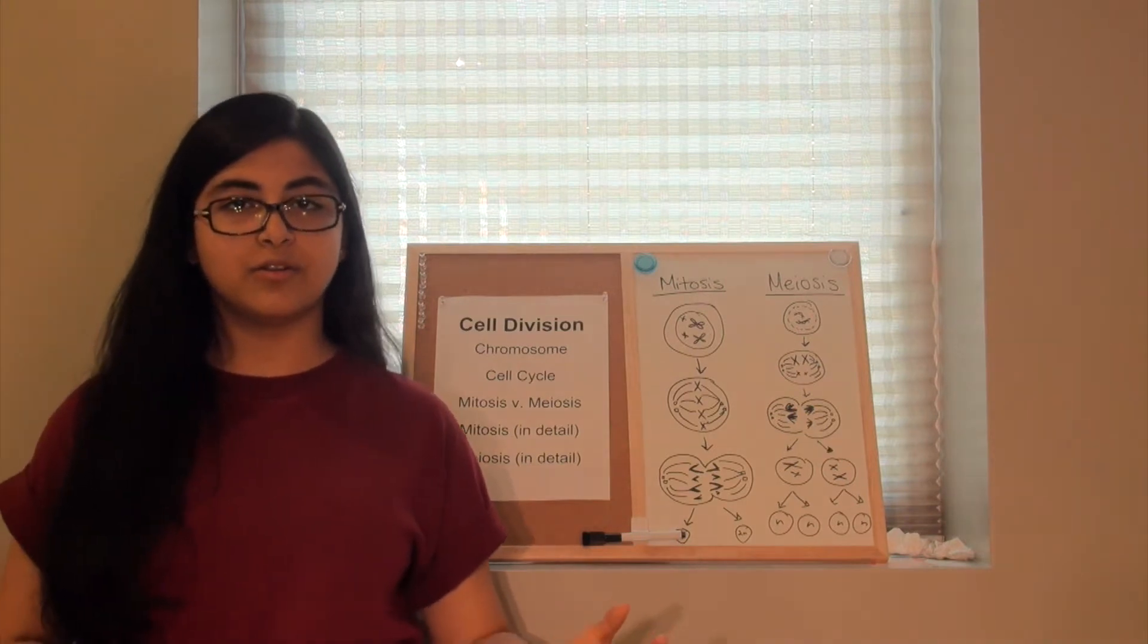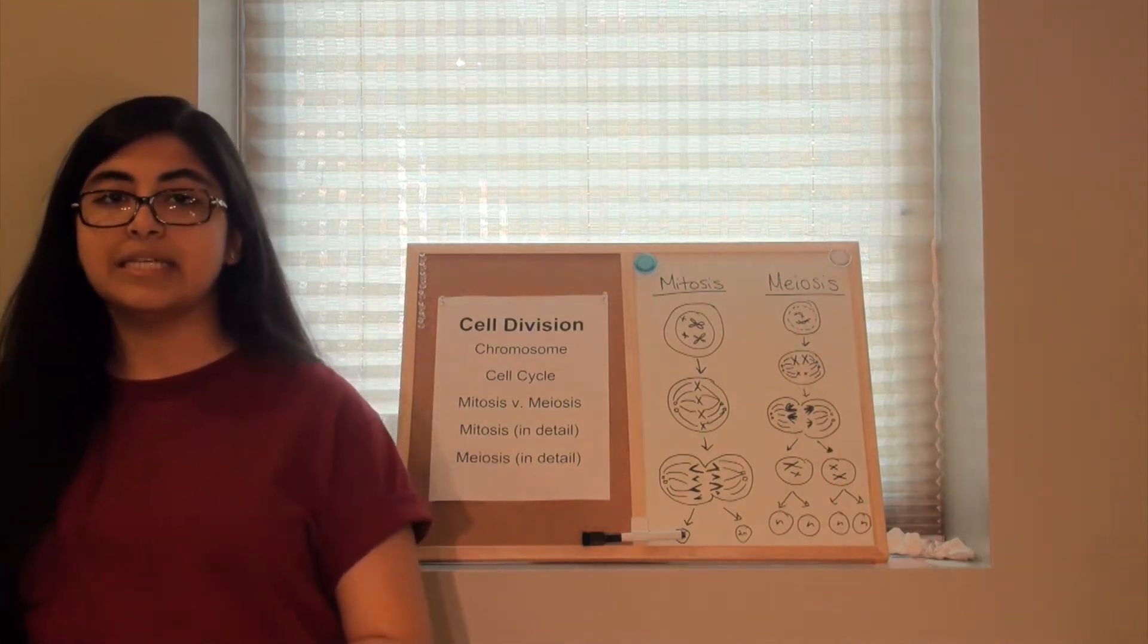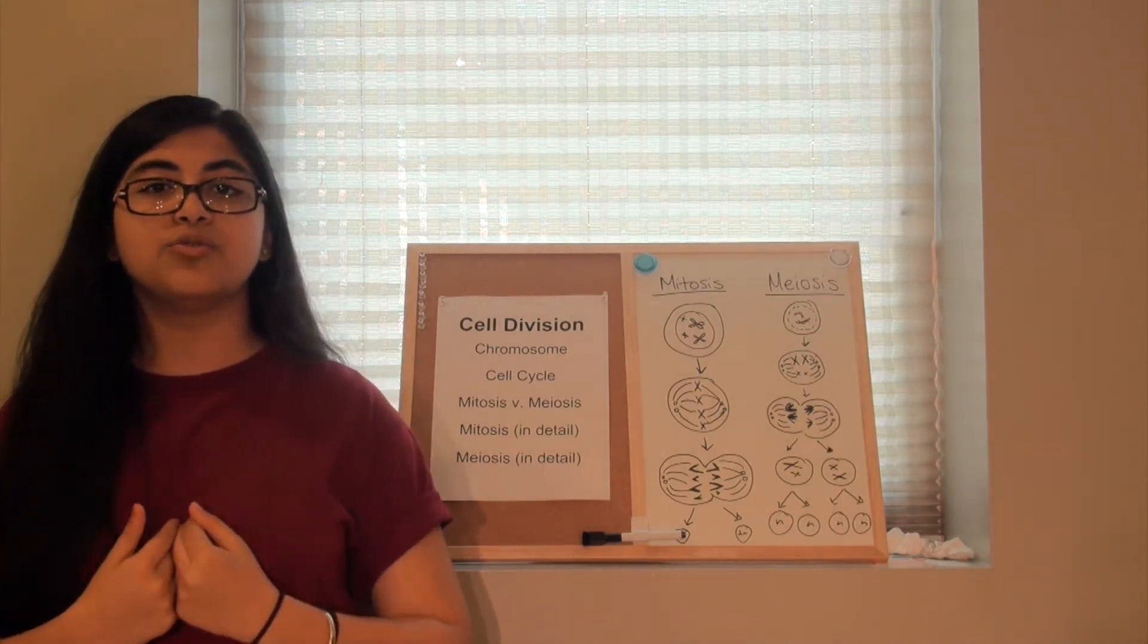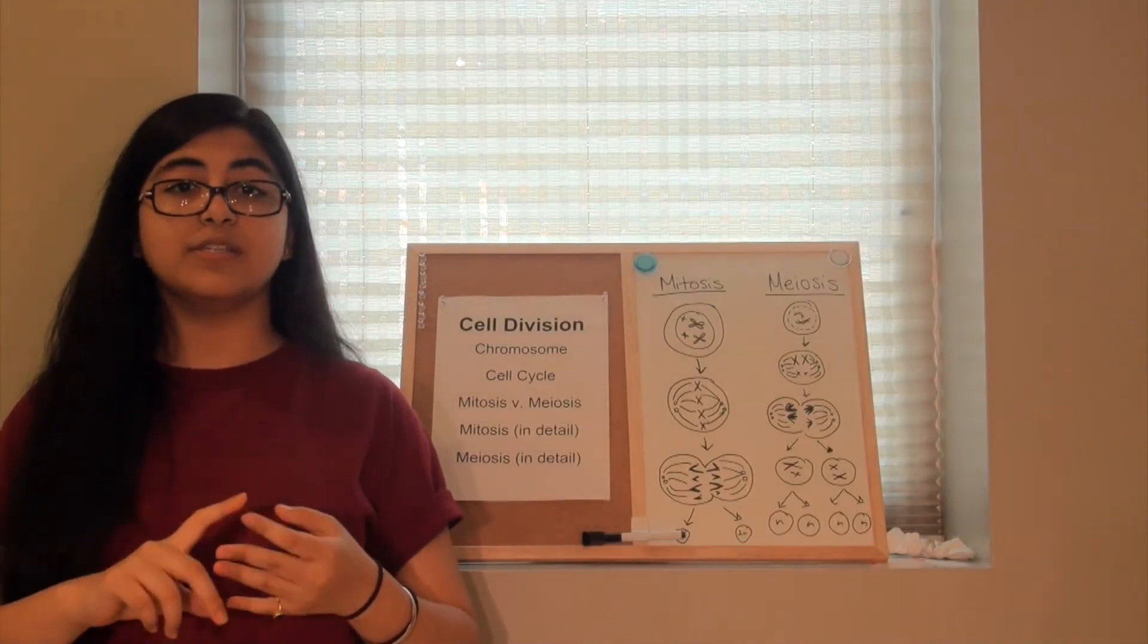So getting back to the cell cycle, now that you know what interphase is, let's go into mitosis in detail. There are four different stages of mitosis. The way I remember them is through the acronym PMAT. So you have prophase, metaphase, anaphase, and telophase.